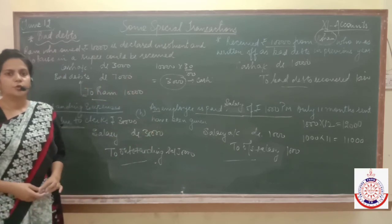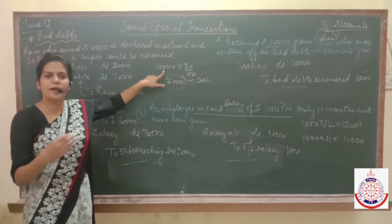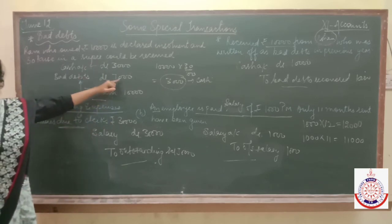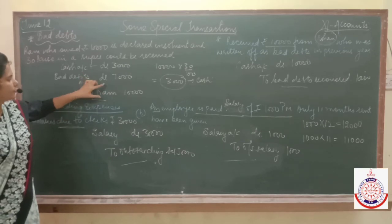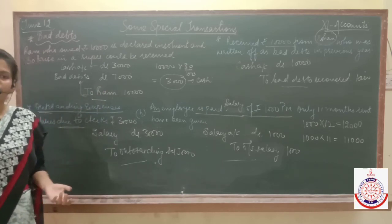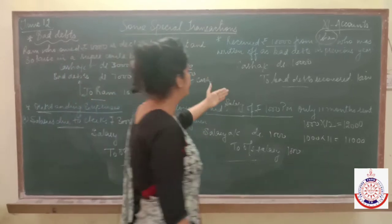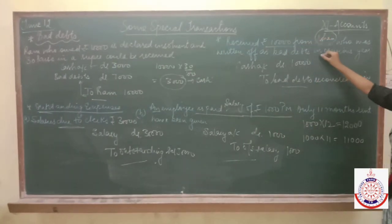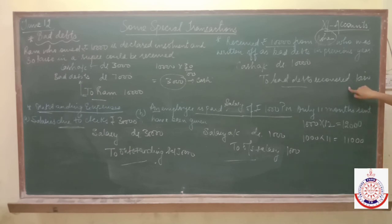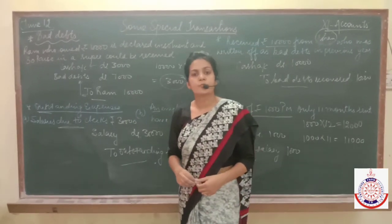I hope these three concepts are clear. Bad debts means the amount we have not received from debtors — total 10,000 owed by Ram, he paid only 3,000 in cash, so 3,000 is debited in cash account and 7,000 he couldn't pay, making him bad debts. We debit bad debts and credit Ram's account, making his balance zero. For bad debts recovered, if any bad debt of the previous year gives money in the current year, we pass: cash account debited to bad debts recovered. Bad debts recovered is income — that's why it is credited; bad debts is a loss — that's why it is debited.